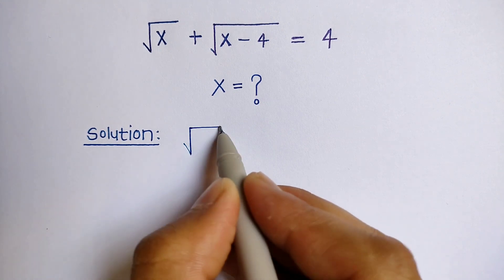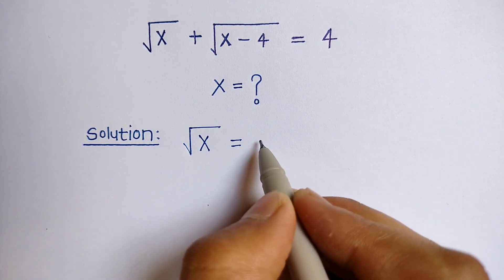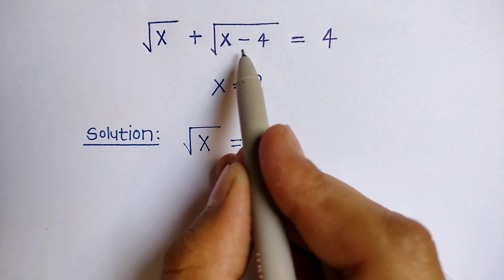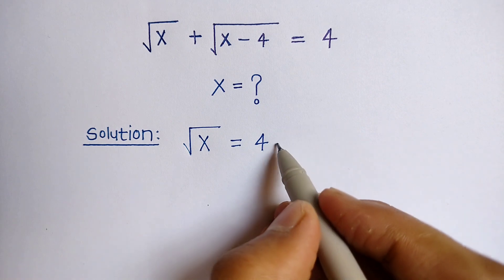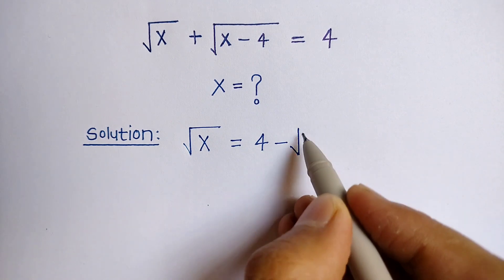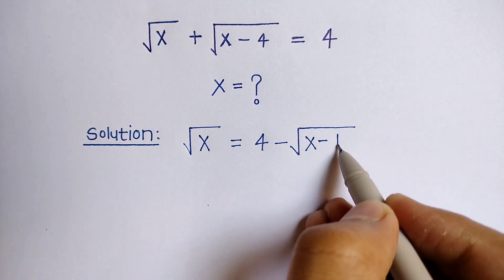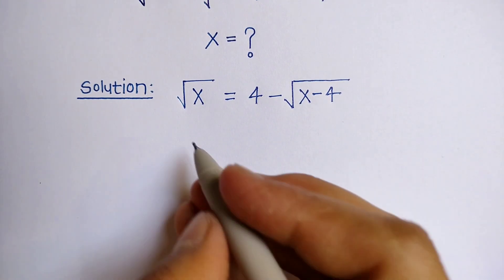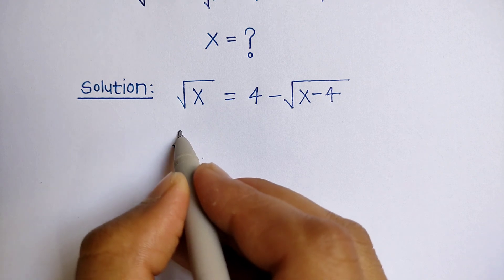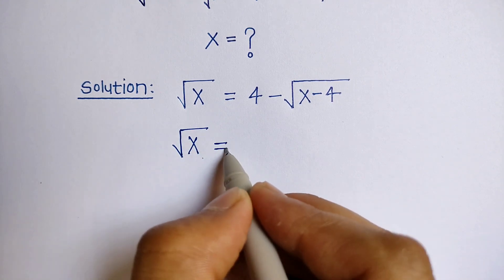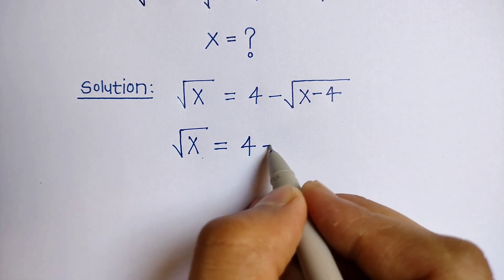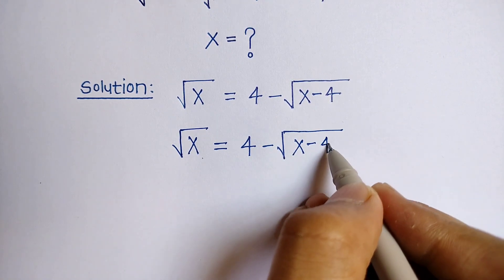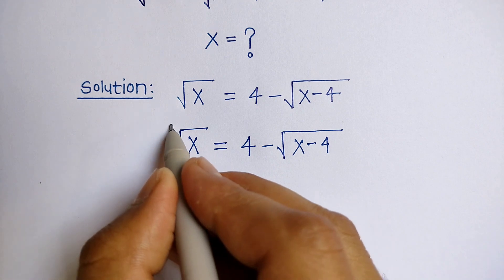We rearrange so that root x is equal to 4, and we take root x minus 4 to the right-hand side, so it becomes minus root x minus 4. Therefore, root x is equal to 4 minus root x minus 4. Now we square both sides.